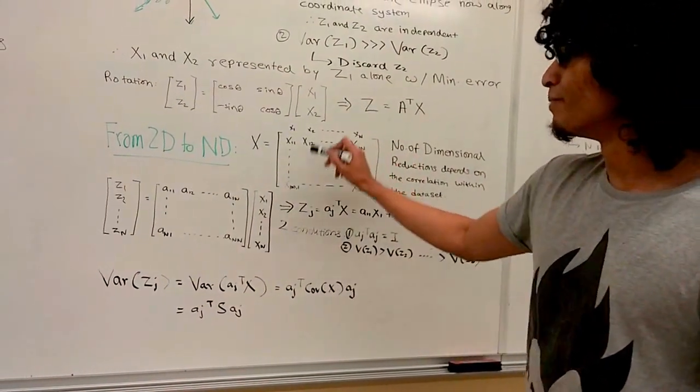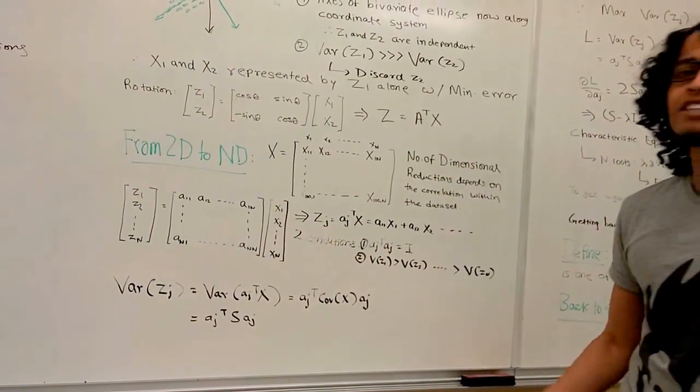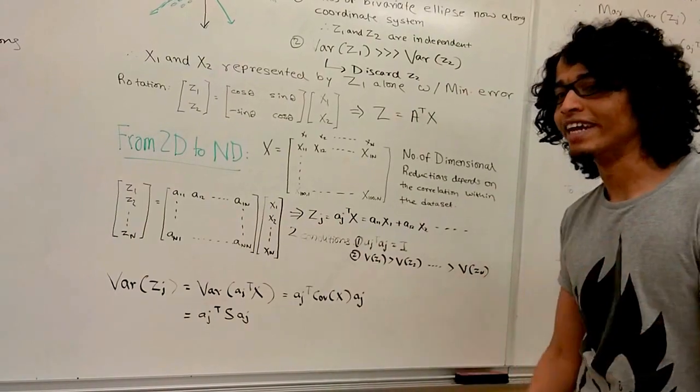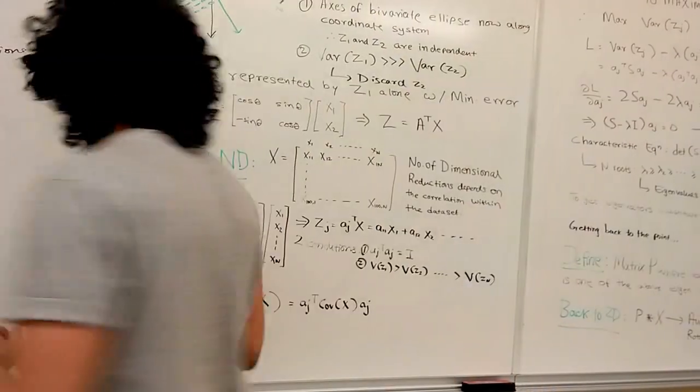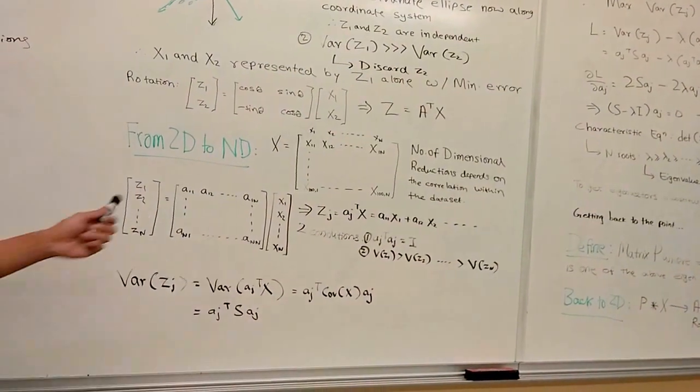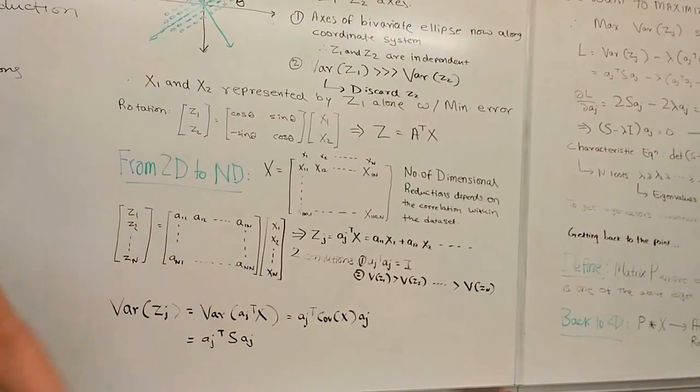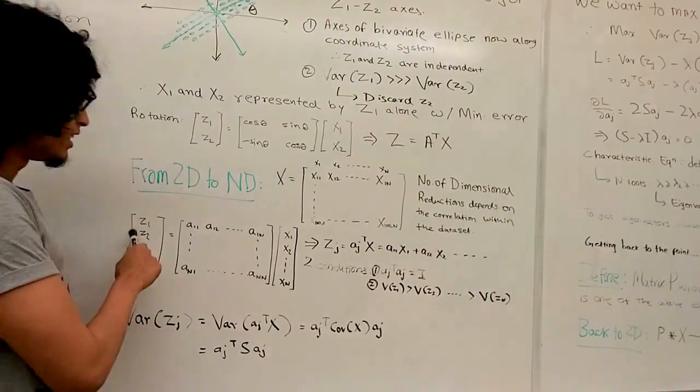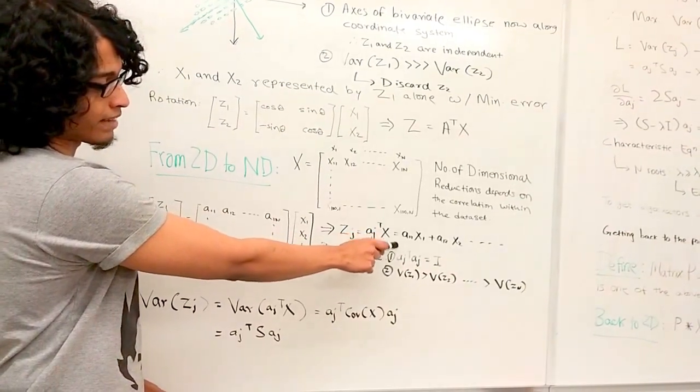You're tracking n parameters per student. Your number of dimensional reductions actually depends on the correlation within your data set. If I rotate in n dimensional space, or whatever transform it is - suppose it's this transform, which is n by n. Each zj is related to x by aj transpose times x.